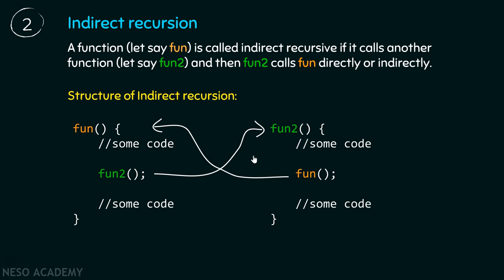Let me repeat the definition. A function, let's say fun, is called indirect recursive if it calls another function, let's say fun2, and then fun2 calls fun directly or indirectly. I know it will be a little bit difficult to understand the concept behind indirect recursion, and you want to know where indirect recursion is useful. So to address these doubts, let me give you one program which will help you understand indirect recursion in better detail.